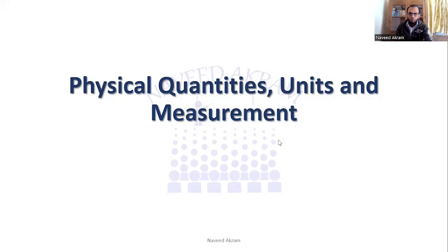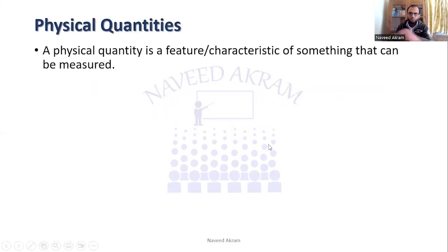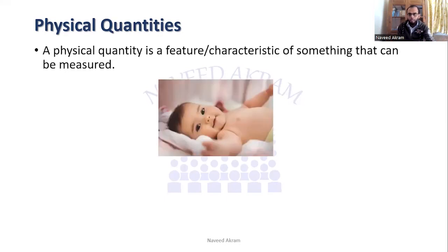First of all, let's see what is a physical quantity. A physical quantity is a feature or characteristic of something that can be measured. For example, let's see this baby. Now this baby has some height.